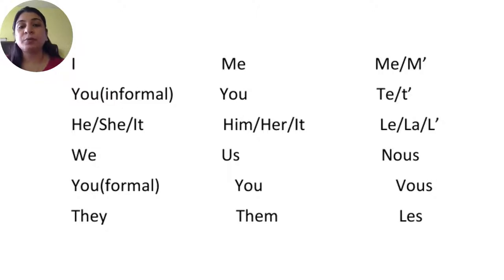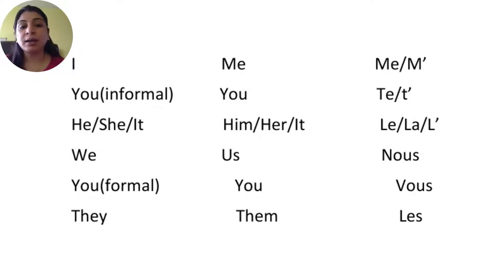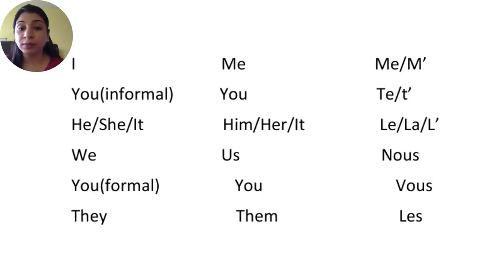Before we see how pronouns work in French, we need to know what the French direct object pronouns are. For 'me' it is 'me', or 'm apostrophe' before a vowel. For 'you' (informal) it is 'te', or 't apostrophe'. For 'him/her/it' we use 'le', 'la', or 'l apostrophe'. If the noun is masculine use 'le'; if feminine use 'la'; if it starts with a vowel use 'l apostrophe'.